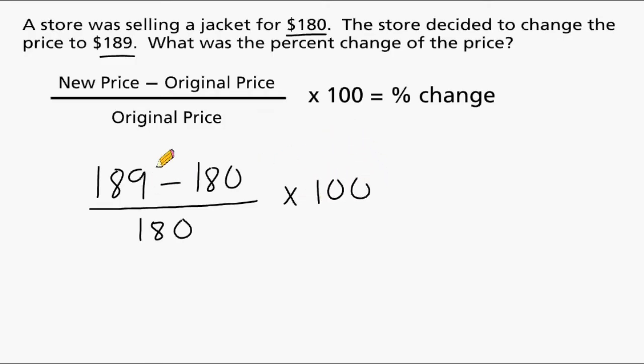So we're going to take this numerator here, which is a difference of 9, and state it as a part of the original price, which was $180. And we're going to multiply this value by 100. I'm going to leave this as a fractional value and write 100 as 100 over 1.